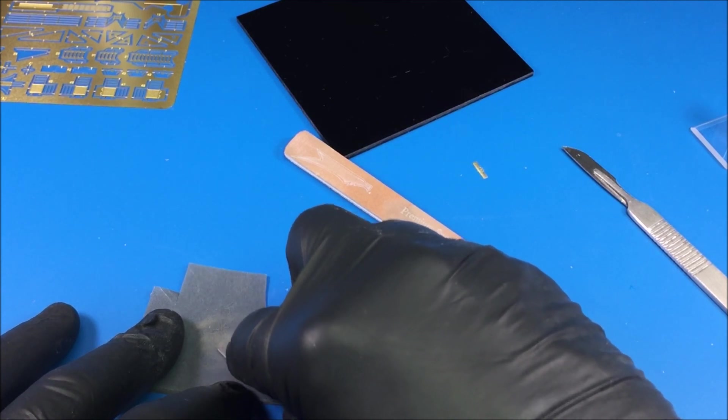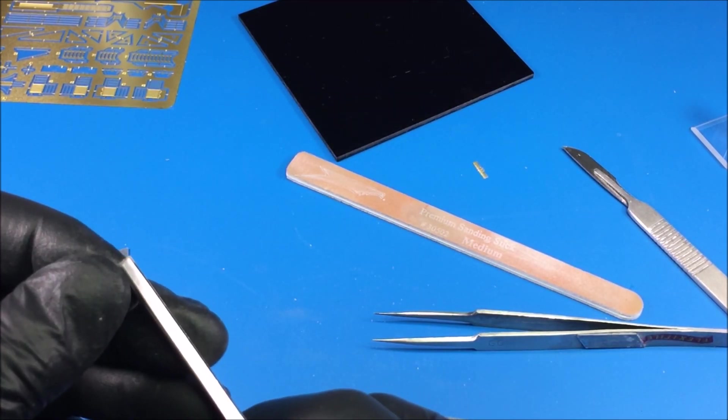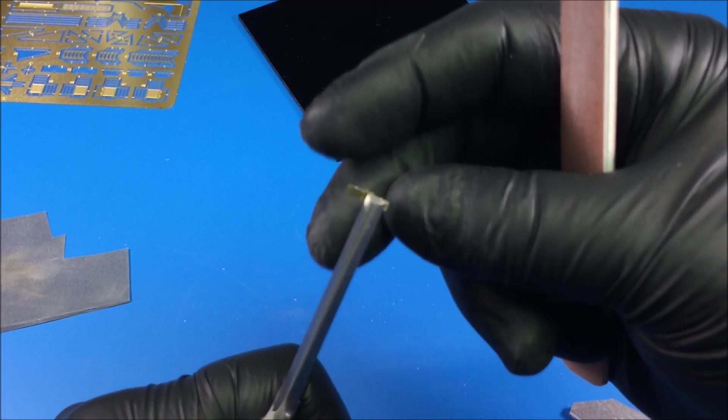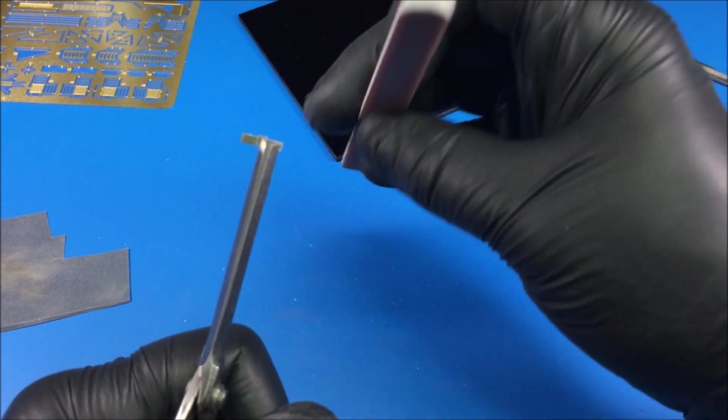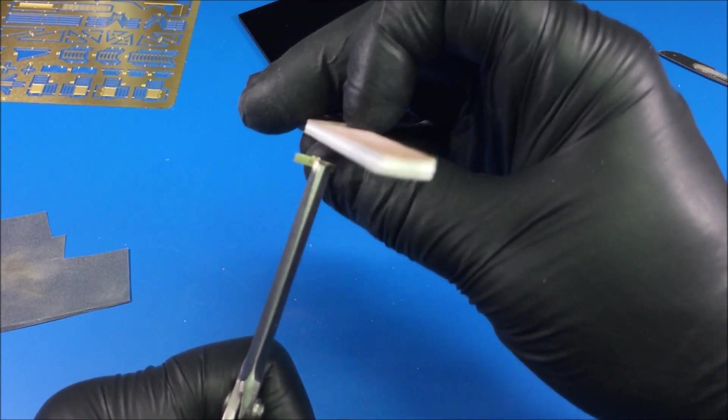The next thing you want to do is grab your photo etch pliers or whatever it is that you've got to use as a holder. Get that piece in so it's almost hidden like that.